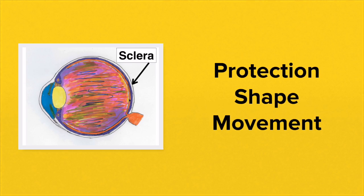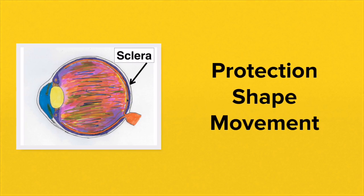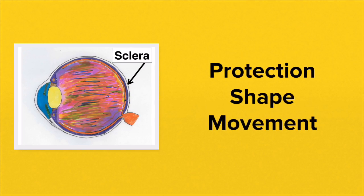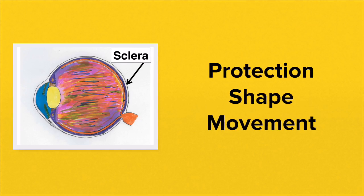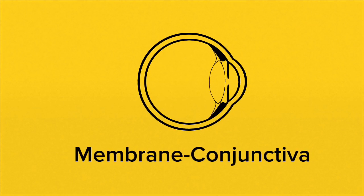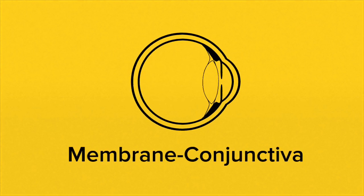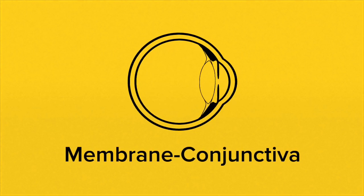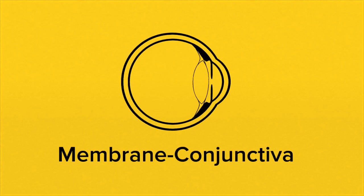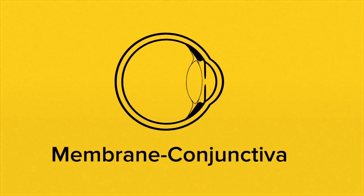The sclera is very tough so it has a protective role for the eye. It gives shape to the eyeball and it's also involved in movement because many muscles attach onto the sclera. The sclera is also covered in a protective membrane known as the conjunctiva — so if you have inflammation of the conjunctiva, you have conjunctivitis.